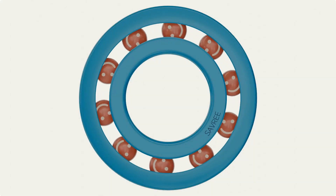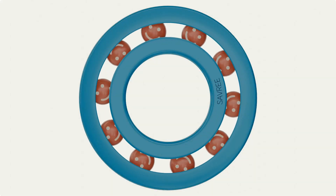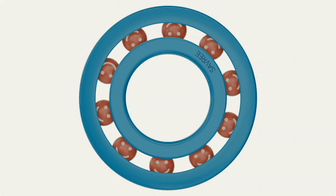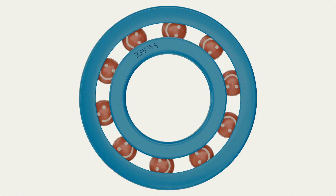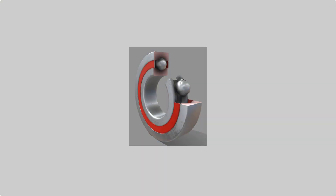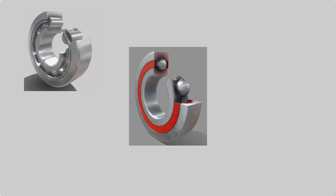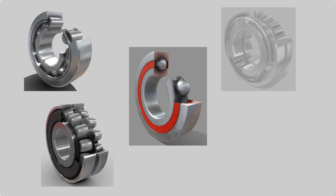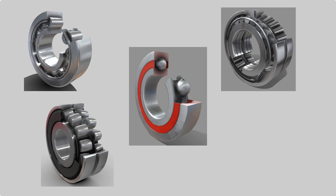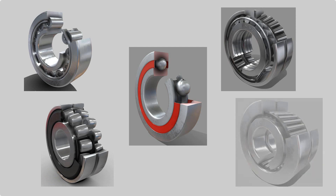Once we've built up your basic bearing knowledge, we'll then have a look at some common anti-friction bearing types, such as the ball bearing, cylindrical roller bearing, spherical roller bearing, tapered roller bearing, and needle roller bearing.